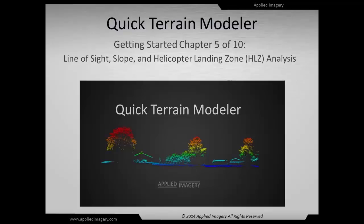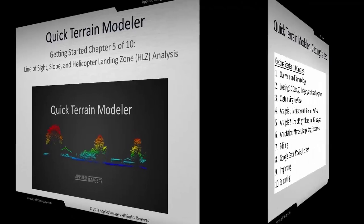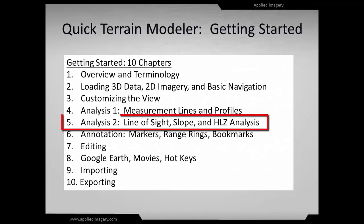Welcome to Chapter 5 of the Quick Train Modeler Getting Started tutorial series. In this module, you'll learn how to perform three useful analysis functions, namely Line of Sight, Slope, and Helicopter Landing Zone, or HLZ, analysis.